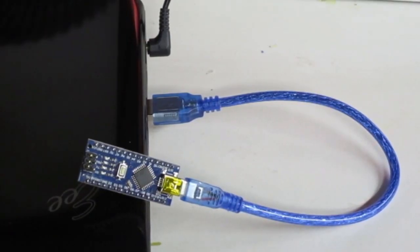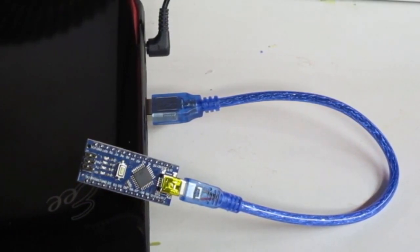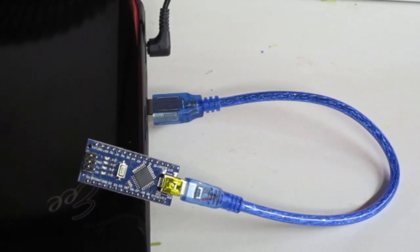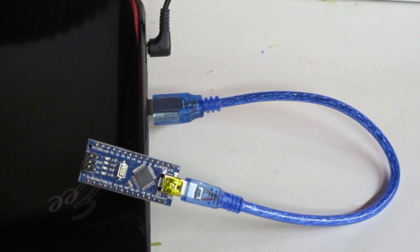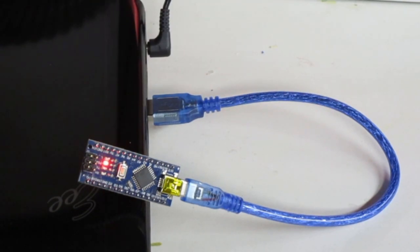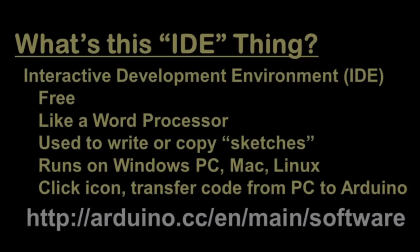An Arduino can do very little right out of the box. It first needs to be connected to a personal computer by the USB cable that comes with it. This gives power to the Arduino and a small LED in the middle of the chip starts to flash. To make an Arduino do what we want, we have to download a sketch to it, and this requires us to download and use the Interactive Development Environment, or IDE.